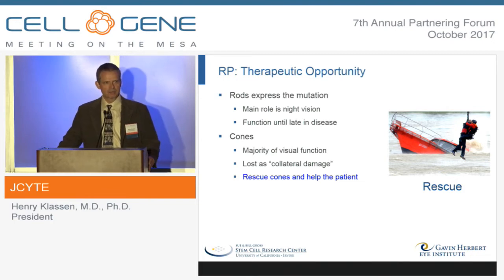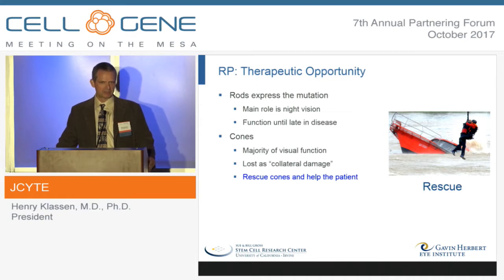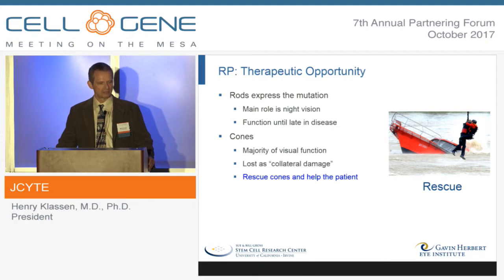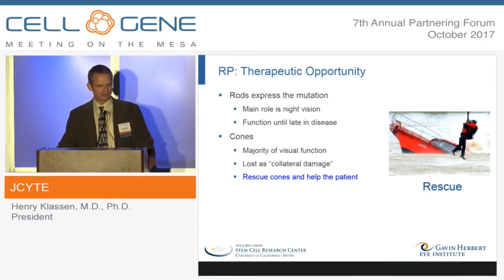To understand the potential therapeutic opportunity, we have to drill down on the different contribution of these two cell types to the disease. The rods are the cells that express the mutation, and the rods express it exclusively. However, rods are only important in humans for night vision, and the rods maintain their function despite the mutation until late in the disease. Cones, on the other hand, do not express the mutation, and yet they're important for most of visual function as a human. Unfortunately, these cells are lost late in the progression of the disease due to a bystander effect.